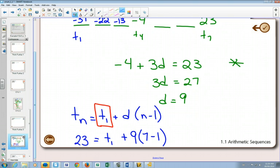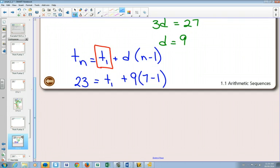That would mean my n would be seven minus one. If I use the term four, then my n would have been a four minus one.